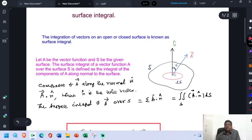Here I have taken a smaller surface Ds. The component of the given vector function A normal to the smaller surface Ds is vector A dot n cap. Here n cap is the unit vector.